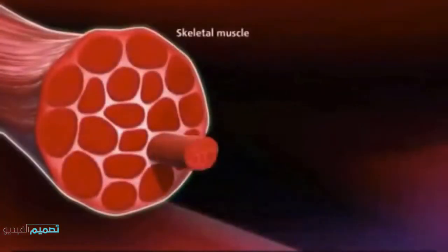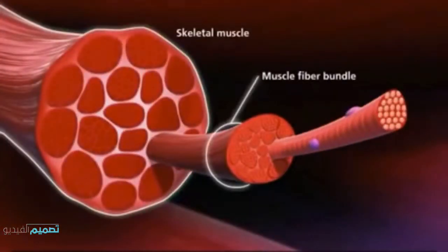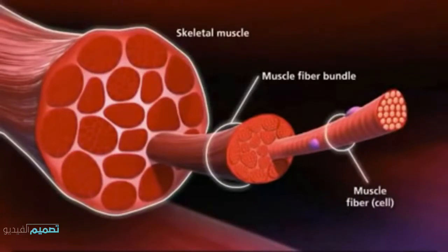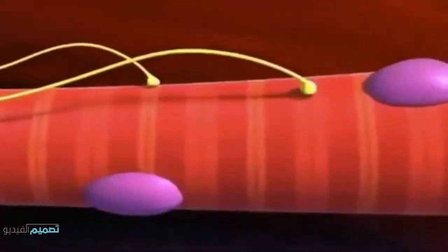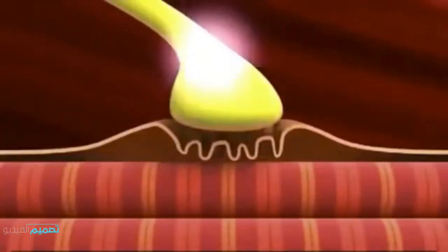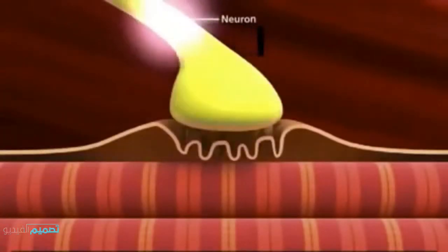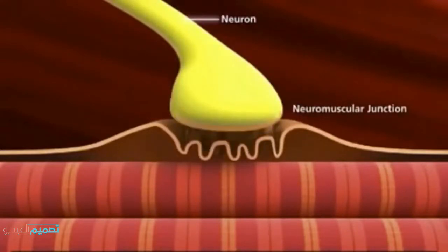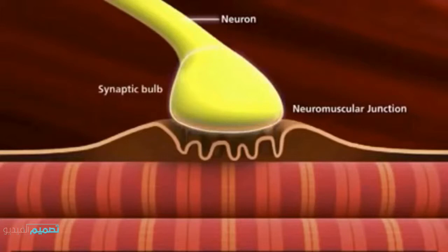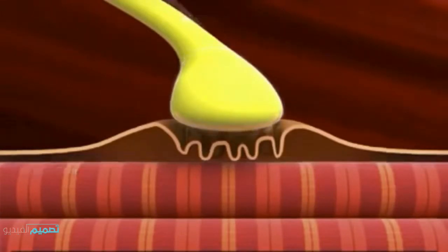Skeletal muscles are composed of bundles of muscle fibers. Muscle fibers are long cylindrical cells containing several nuclei. Muscles will contract or relax when they receive signals from the nervous system. A neuromuscular junction is the site of the signal exchange — this is where the synaptic bulb of an axon terminal and muscle fiber connect.